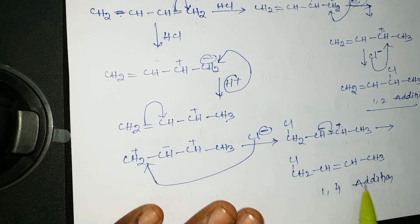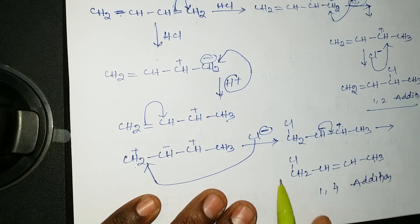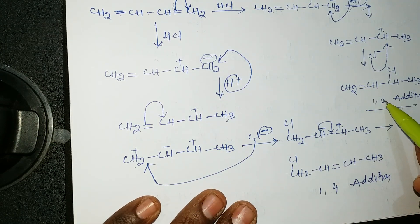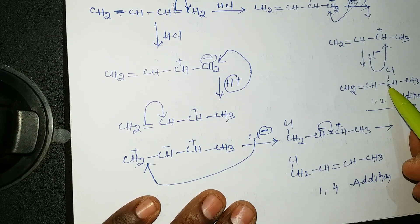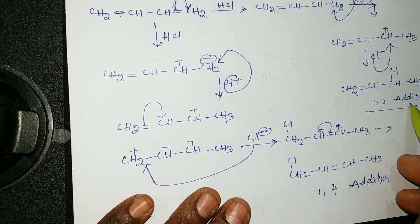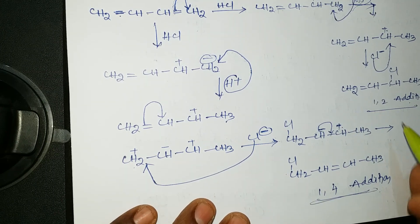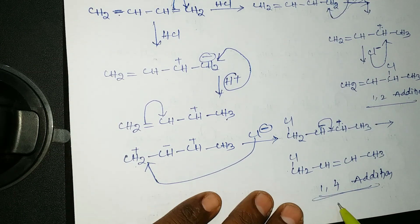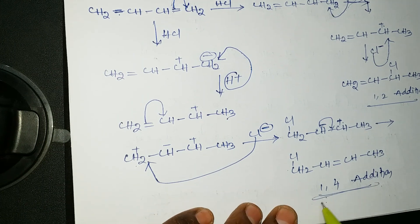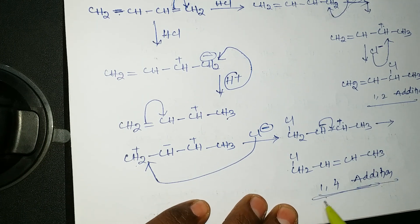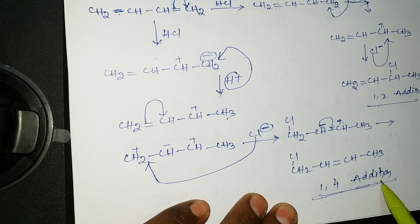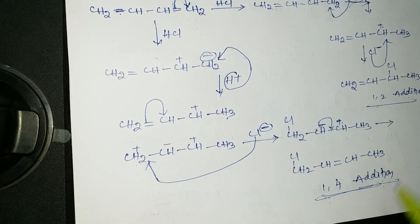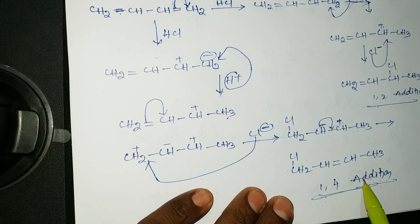In the 1,4 addition reaction, the electrophile attacks the first position and the nucleophile attacks the fourth position. In 1,2 addition, the nucleophile attacks the second position. Out of these two, which one is more stable? The 1,4 addition reaction is more stable than the 1,2 addition reaction, due to hyperconjugation.